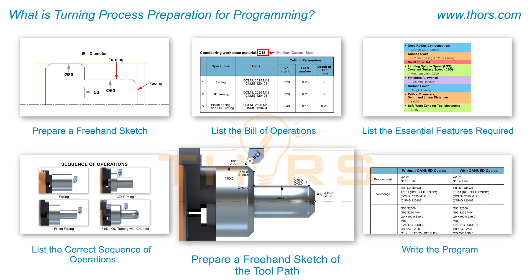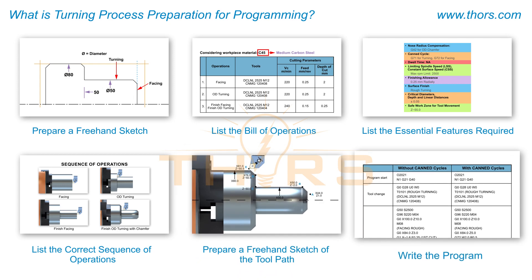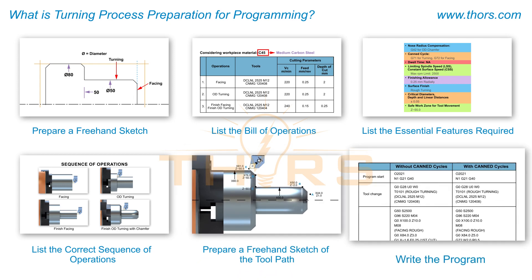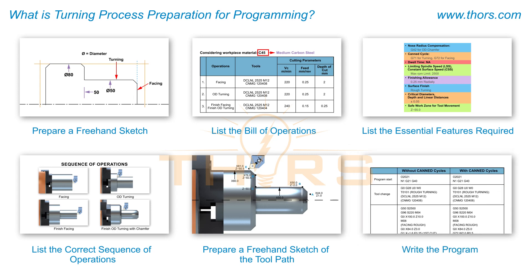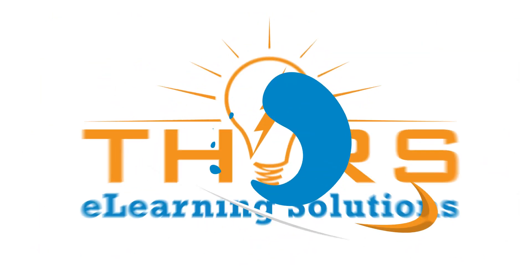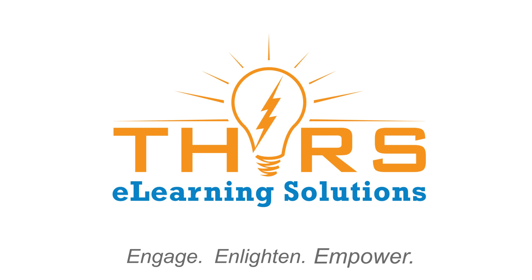Step 5: Prepare a freehand sketch of the toolpath for the operation, including listing the coordinates for the toolpath of each individual cut. Step 6: Write the program for the turning operation.